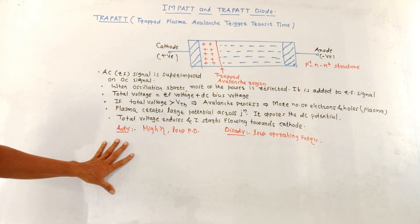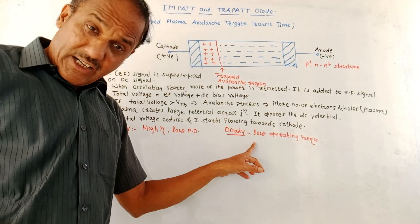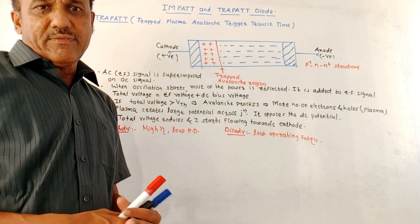Now the advantages, the major advantages compared to the IMPATT diode is it is having higher efficiency and low power dissipation. The major disadvantage compared to IMPATT diode is its operating frequency is low.